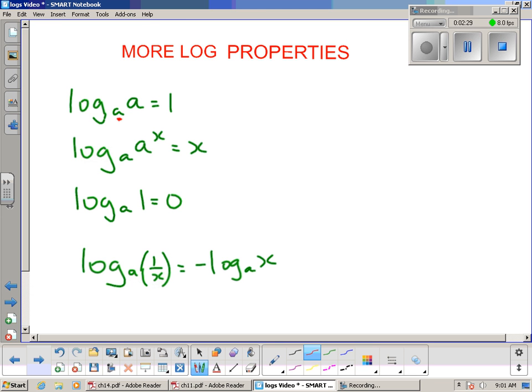Log to the base a of a asks: what power have I got to put this a to in order to get this a? a to the power of 1 will become a—that's why we've got a 1 there. If we have anything with the same base, log to the base 5 of 5 will equal 1, log to the base 2 of 2 will equal 1, because 5 to the 1 becomes 5 and 2 to the 1 becomes 2.